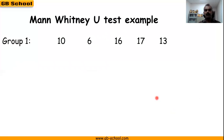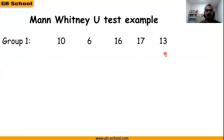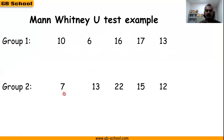So let's go with an example here. Group 1 has 5 members with data: 10, 6, 16, 17, and 13. And group 2 also has 5 members: 7, 13, 22, 15, and 12.